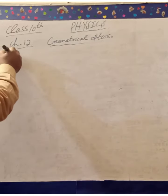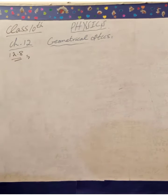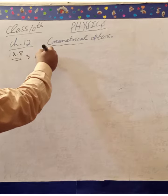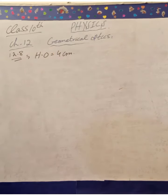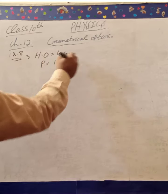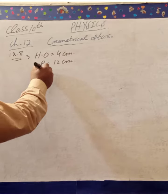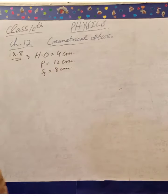Okay, next we have problem 12.8. An object of 4 centimeter height is placed at a distance of 12 centimeters from a convex lens with focal length 8 centimeters. Calculate the position and size of the image.